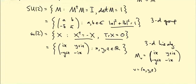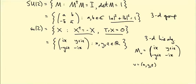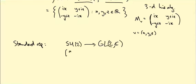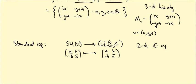What representations do we already know of this group? A representation is a way of representing group elements as matrices, and the group elements are 2×2 matrices. So it comes with what's known as the standard representation — the map from SU(2) to GL(2,ℂ) taking the matrix (A, B; -B̄, Ā) to itself, considered as a 2×2 complex matrix. This is a two-dimensional complex representation; it turns out to be irreducible, and it's the basic representation of SU(2).